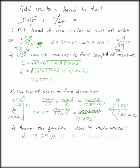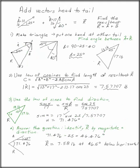So now we can answer the question. R is 7.58 pounds, or whatever units you have, at 46.5 degrees below the horizontal.